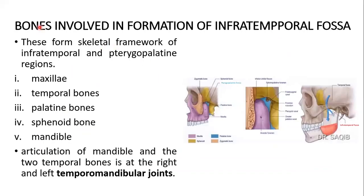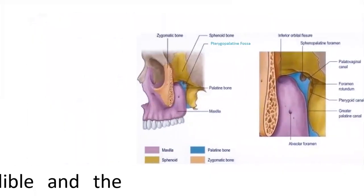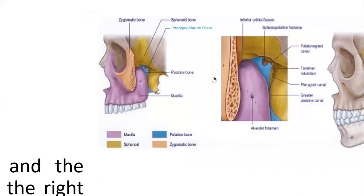The bones involved in formation of the infratemporal fossa are the maxilla, temporal bone, palatine bone, sphenoid bone, zygomatic bone, and the mandible. The temporal bone also articulates with the condyle of the mandible, forming the right and left temporomandibular joints. In the zoomed picture you can see the maxilla, the small contribution of the palatine bone, the sphenoid bone, and the zygomatic bone — these five bones forming the infratemporal fossa.